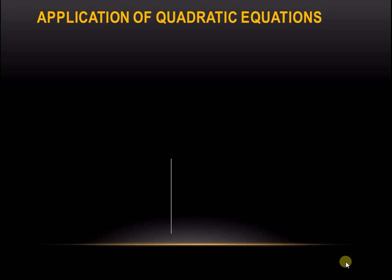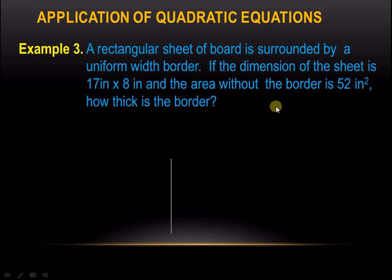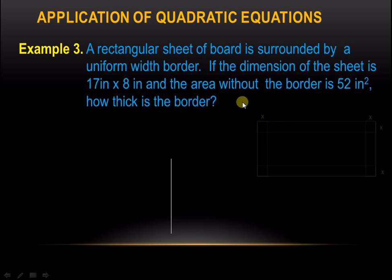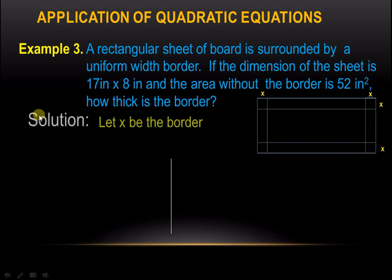Example number 3. A rectangular sheet of board is surrounded by a uniform-width border. If the dimensions of the sheet are 17 inches by 8 inches and the area without the border is 52 square inches, how thick is the border? This is how it looks — this is the border, this is the length, and this is the width. If x is the border thickness, let us apply the area formula for a rectangle.